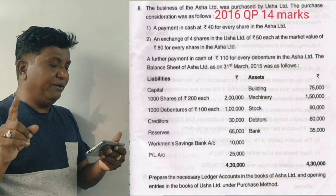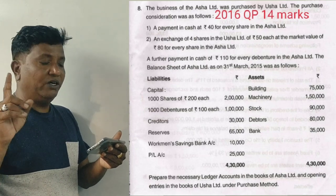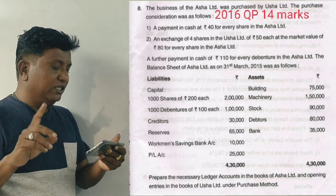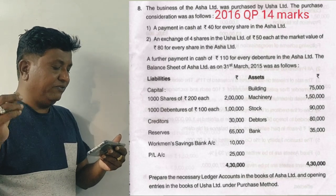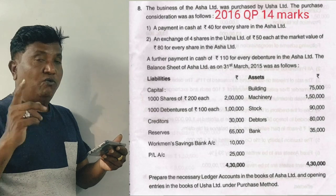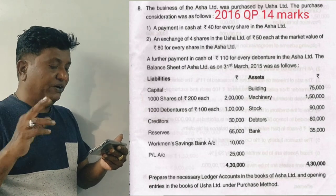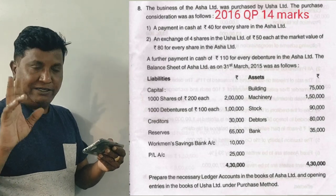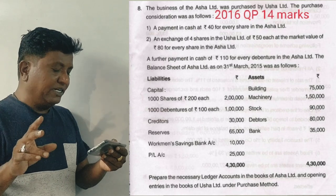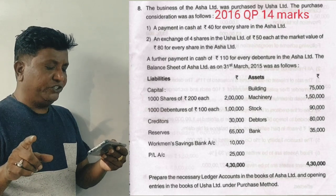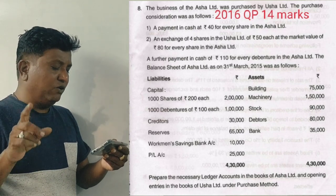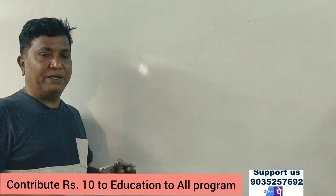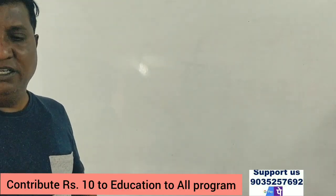The balance sheet of Asha Limited as of March 2015 shows: capital of 1,000 shares, 1,000 debentures of Rs.100 each, creditors, reserves, workmen's savings, bank account, profit and loss account, building, machinery, stock, debtors, and bank. Prepare the necessary ledger accounts in the books of Asha Limited and opening journal entries in the books of Usha Limited under the purchase price method.